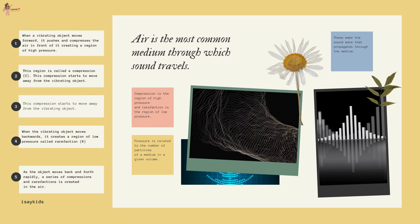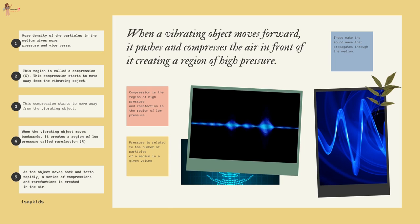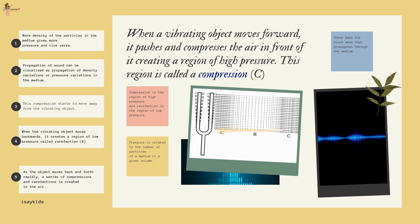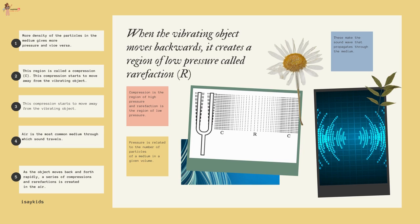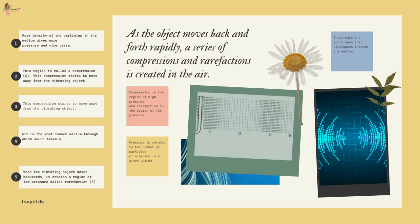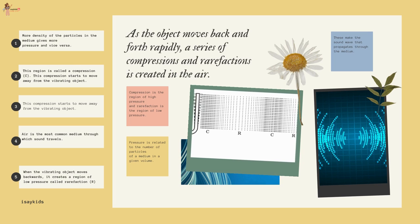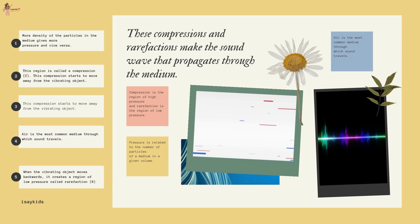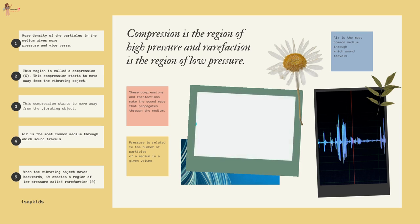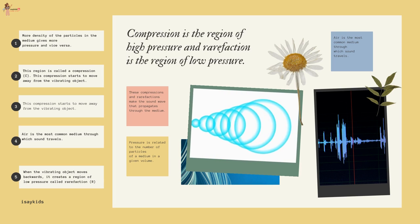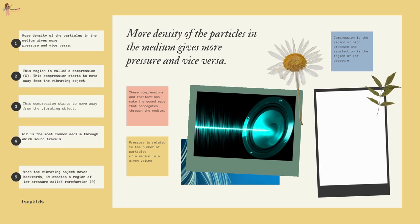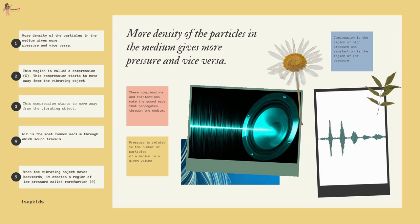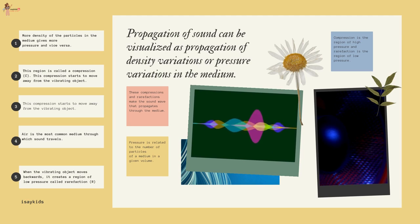Air is the most common medium through which sound travels. When a vibrating object moves forward, it pushes and compresses the air in front of it, creating a region of high pressure called a compression. This compression starts to move away from the vibrating object. When the vibrating object moves backwards, it creates a region of low pressure called rarefaction. As the object moves back and forth rapidly, a series of compressions and rarefactions is created in the air — these make the sound waves that propagate through the medium. Compression is the region of high pressure and rarefaction is the region of low pressure. Pressure is related to the number of particles of a medium in a given volume — more density of particles gives more pressure.